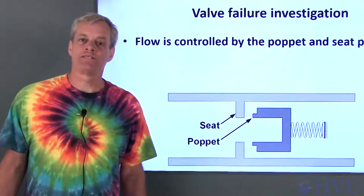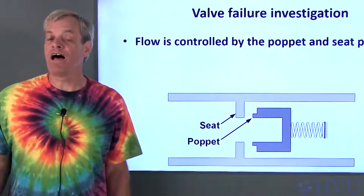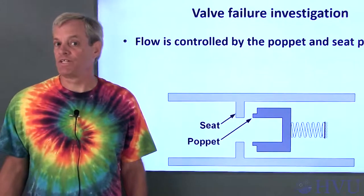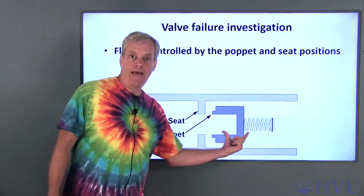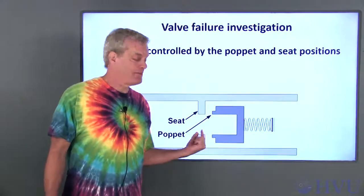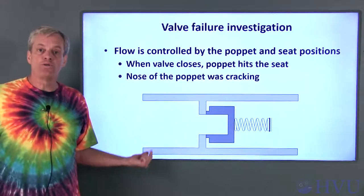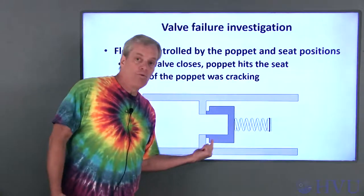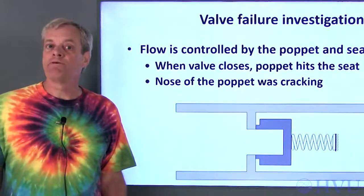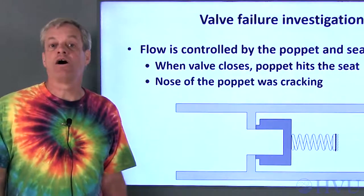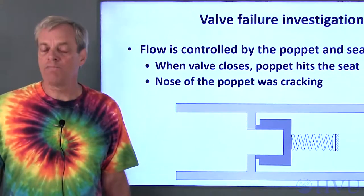Another example of the effects of pressure wave reflections and transmissions is a valve failure investigation I was on. The valve looks like this. The poppet moves back and forth while the seat is stationary. The problem is that the nose of the poppet was cracking when the poppet closed. We suspected that the poppet was hitting the seat harder than we expected, but the answer was a little more complicated than that.